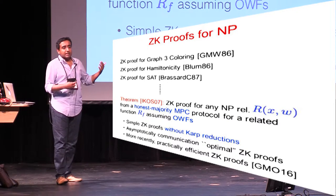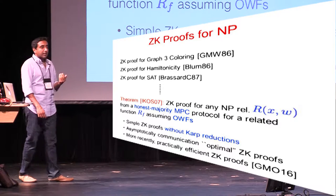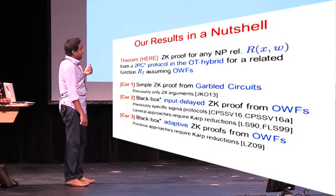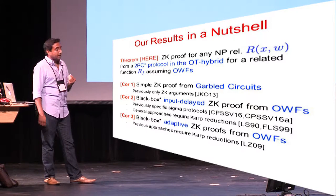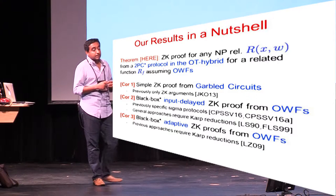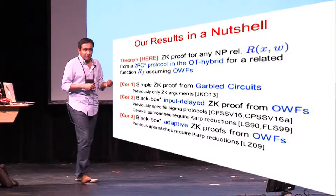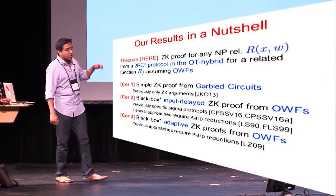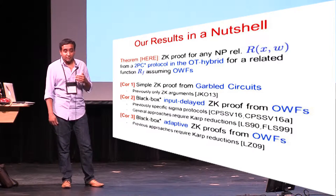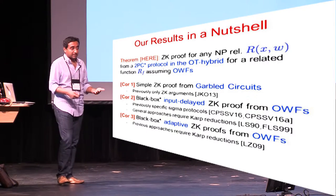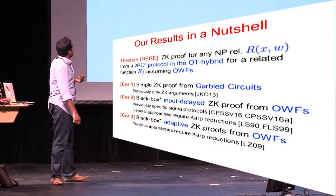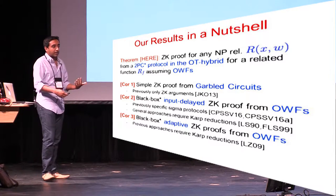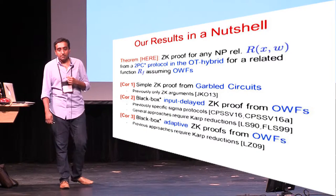Our work is similar in spirit to this line of work. Our main result, informally stated, shows that starting from any two-party protocol in the OT hybrid, we can construct a zero-knowledge proof for any NP relation. Two-party is supposed to be a specific case of MPC, so something is going on here. We show this for two-party computation in the oblivious transfer hybrid, meaning the parties have access to an OT functionality. I'll argue in a couple of slides why the IKOS approach does not directly work for two-party protocols.